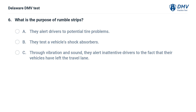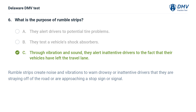What is the purpose of rumble strips? A. They alert drivers to potential tire problems. B. They test a vehicle's shock absorbers. C. Through vibration and sound, they alert inattentive drivers to the fact that their vehicles have left the travel lane. Rumble strips create noise and vibrations to warn drowsy or inattentive drivers that they are straying off of the road or are approaching a stop sign or signal.